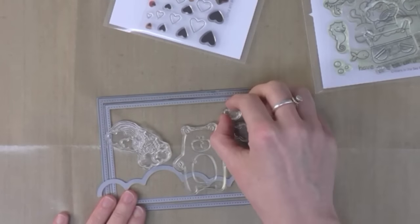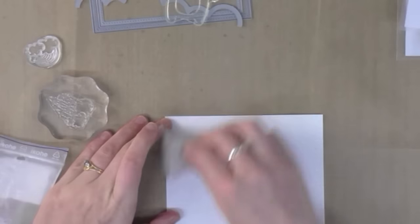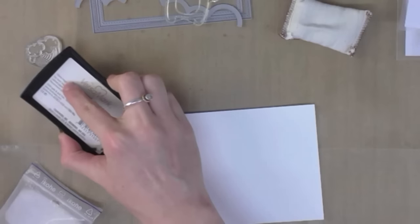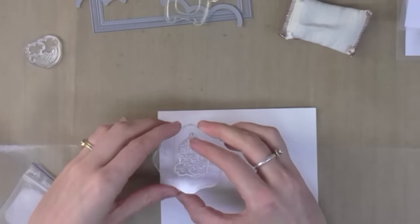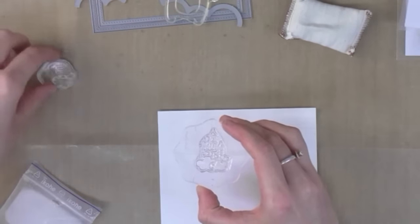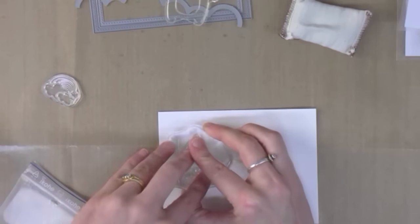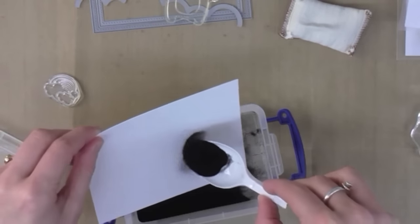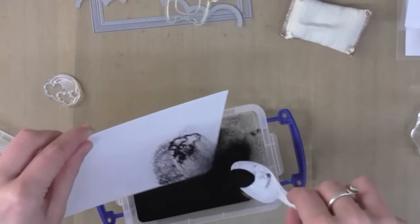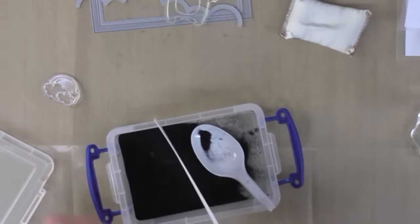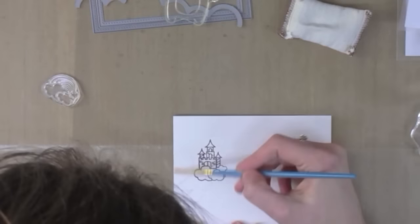For this card I planned it out beforehand and laid out some of my dies and stamps so I could get an idea of what I wanted to do. I'm working today on some Ranger watercolor cardstock and I'm going to be using my distress inks to do a little bit of watercoloring. I'm using the rough side of the paper so that when I get to coloring it has a little bit of tooth and it gives this lovely watercolor effect.